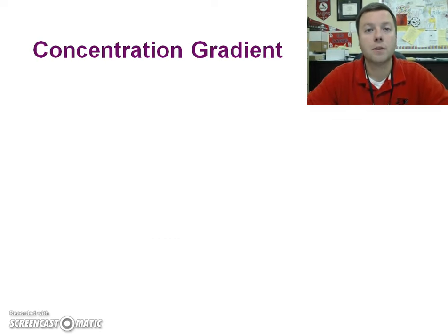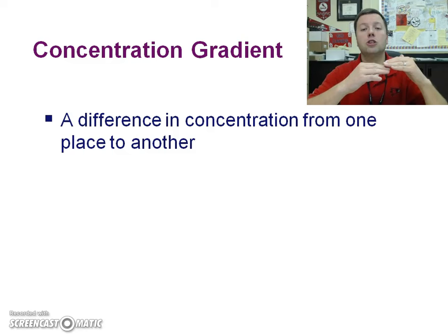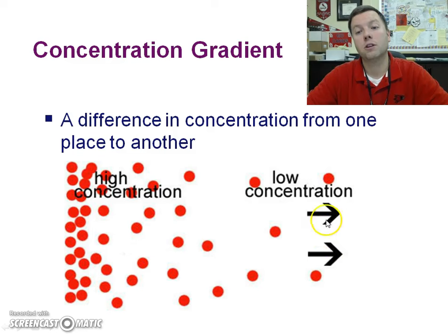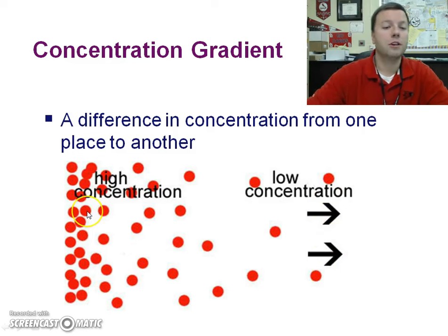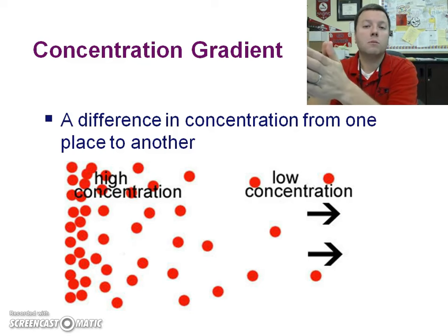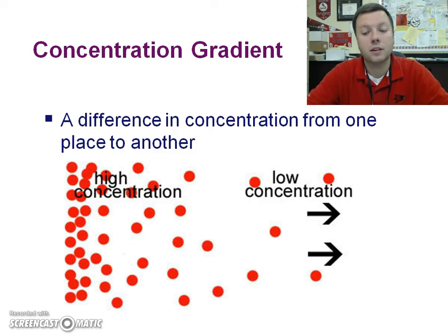So what's going to cause something to want to get through in the first place? That's called the concentration gradient — a difference in concentration from one side to another. You can see in the picture there's a higher concentration of red dots on one side versus the other, and arrows show things moving from high to low concentration. They stop moving when there's the same number of red dots on both sides.